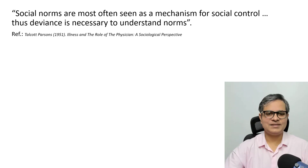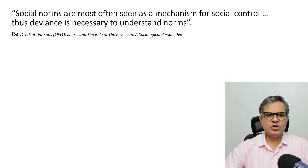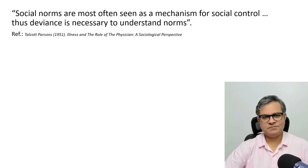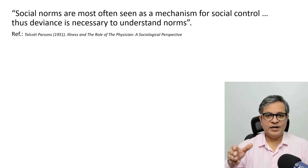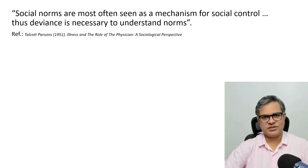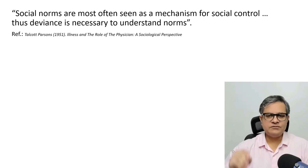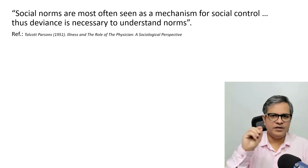And to understand norms we also understand social control. It is said that social norms are a mechanism for social control. So deviance is necessary to understand in order to understand norms — it is one of the most important aspects about studying norms.